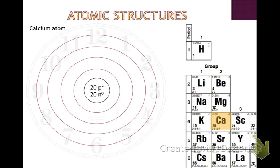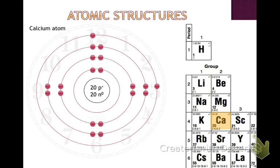Two electrons fit into the first shell — we drop them off at 12 o'clock. In the next shell we fit 8 electrons, placing them at 12, 3, 6, and 9, dropping two in each spot. We do the same for the third shell. The last shell has only 2 valence electrons, so we drop them off at 12 o'clock and 3 o'clock.